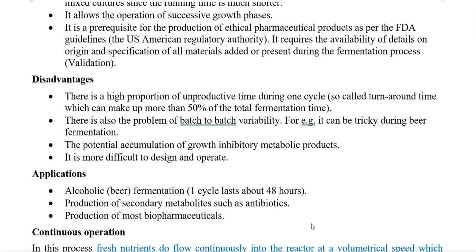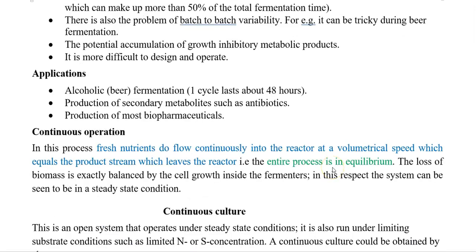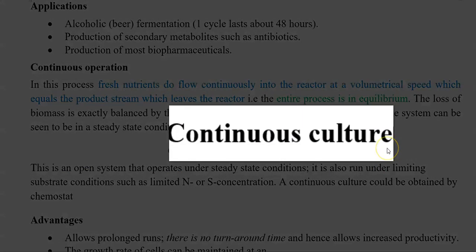The potential accumulation of growth-inhibitory metabolic products, mainly during the stationary phase, is another important problem with batch culture-based cultivation. It is also more difficult to design and operate batch culture for large-scale processes, meaning maintaining large volumes of culture broth. As for applications, batch culture is commonly used in alcoholic fermentation — such as beer fermentation — where a cycle may last around 48 hours, as well as for secondary metabolite production like antibiotics and for biopharmaceuticals.